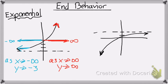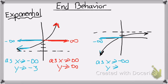Let's try this next example. My x values are approaching negative infinity. So, as my x values are approaching negative infinity, let's see if my y values are going up or down. In this case, it's facing down, so that means it's going down to negative infinity.